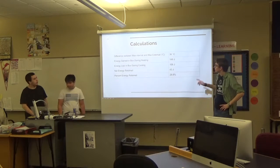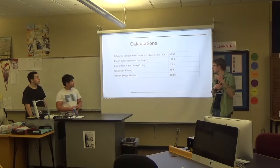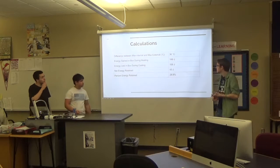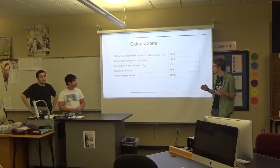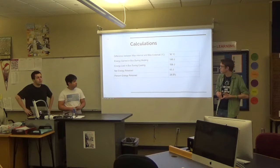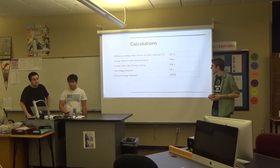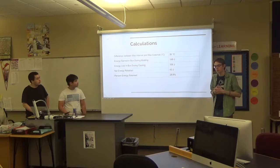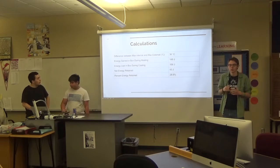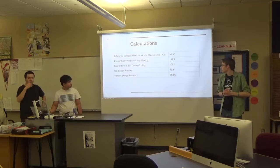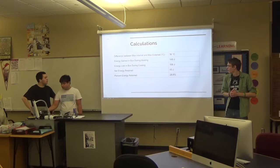And then here are our calculations. The difference between the max internal and max external is 36 degrees centigrade. Our energy gained during the first 20 minutes is 149 joules. The energy lost is 106 joules, leaving us with 43 joules that were gained but not lost, which is 28% of the energy that we put in. The net divided by... I'm pretty sure the difference, one of the gains.